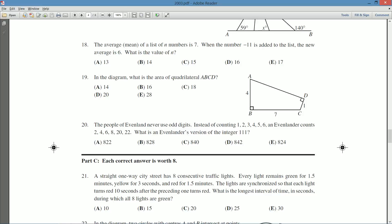The average or mean of a list of n numbers is 7. When the number negative 11 is added to the list, the new average is 6. What's the value of n?